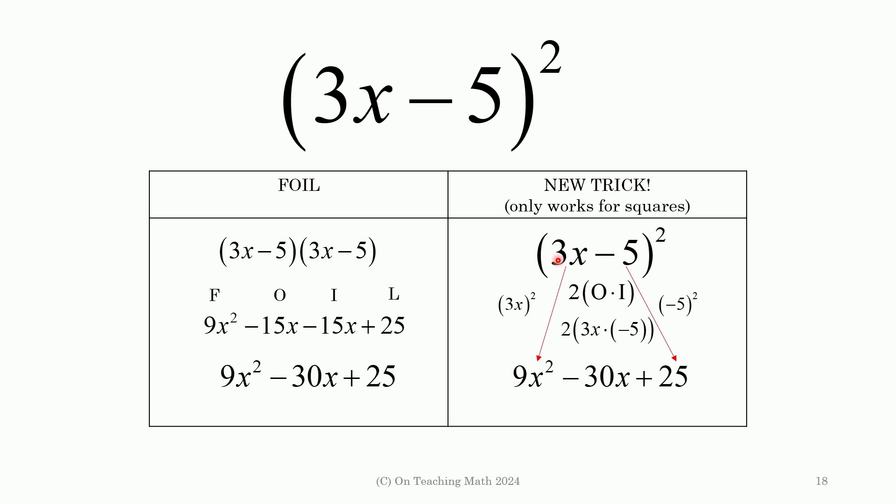But when you do double the outside plus the inside, well, that's 2 times 3x times negative 5. If you multiply these two things together and then times 2, that's what you get. You see? Negative 15x times 2 is negative 30. Or you could do it this way. Negative 6x times negative 5 is negative 30. However you want to do it.